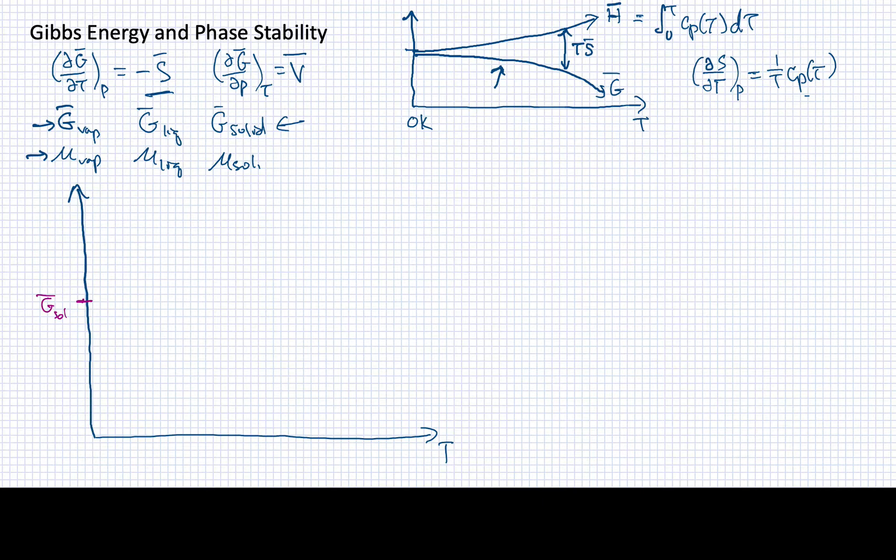Now we know it's going to slope downward. Its slope is going to be moderated by the fact that it equals minus S. And we know that, for example, the molar entropy of the solid is less than the molar entropy of a liquid, and that's less, in fact much less than the molar entropy of a gas. I'll make that a vapor.